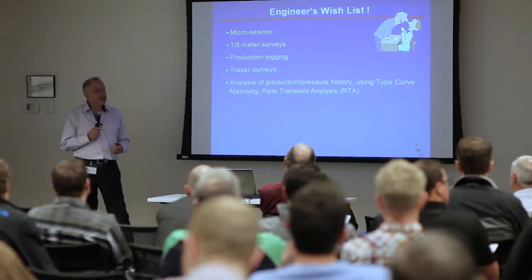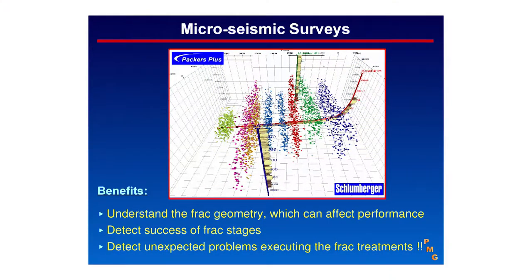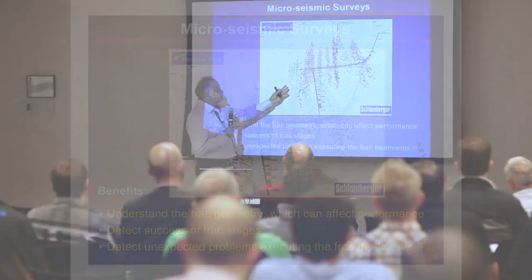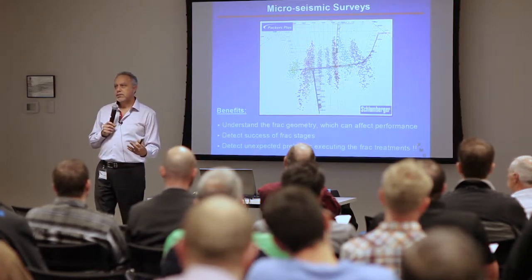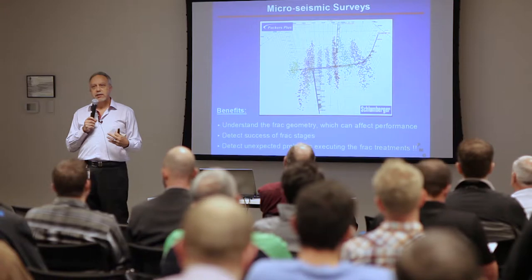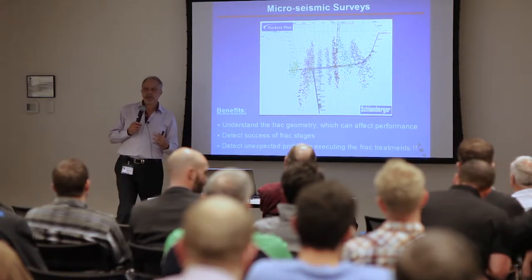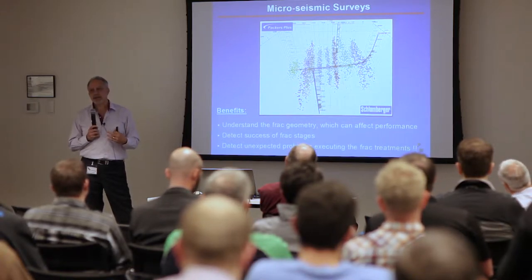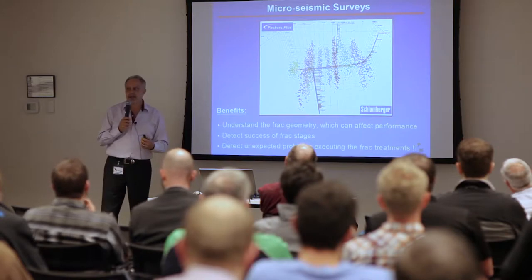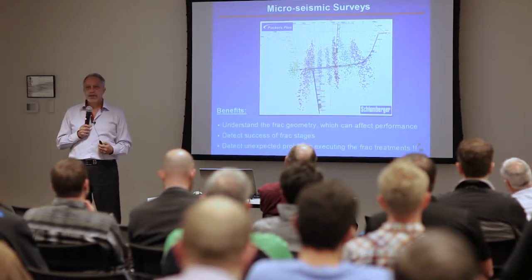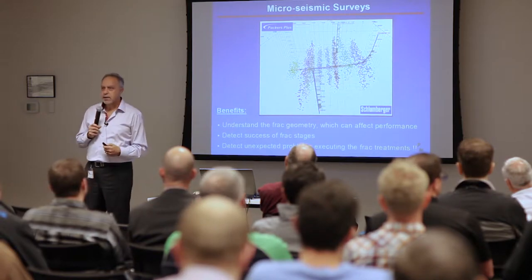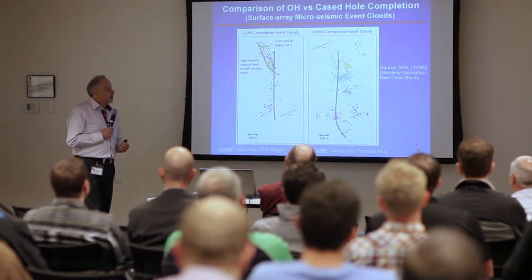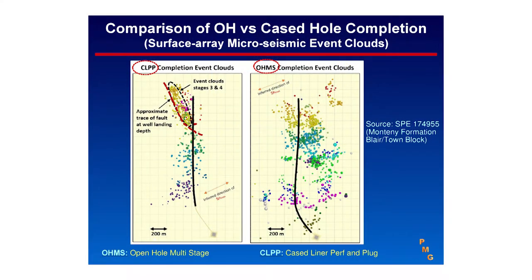One tool widely used now in multi-stage fracking is micro seismic. This typical diagram shows the cloud of events from each stage — each color represents one stage. From this diagram we can extract information about frack geometry, whether we successfully fracked every single stage, whether we see a single planar frack, a branch frack, or complex frack. This information cannot be obtained without a tool like micro seismic. It costs money, but if you can improve production by 10–15%, the expenditure is well spent.